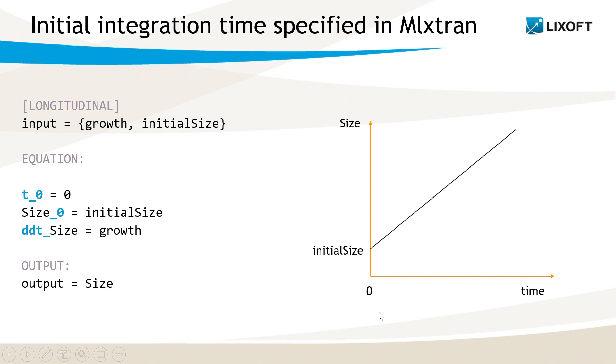If I want initial size to refer to the size at time zero, then I need to specify the initial integration time in the model with t_0 equals zero. I could also write T zero equals zero, it is an equivalent MLXtran keyword.